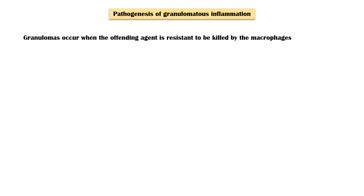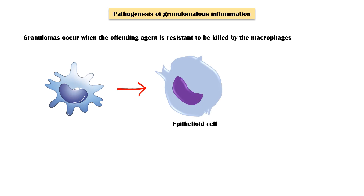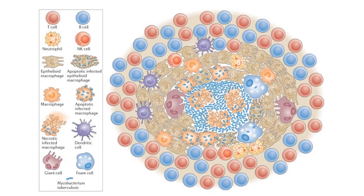Now let's discuss the pathogenesis of granulomatous inflammation. As already mentioned, granulomatous inflammation occurs when the offending agent is resistant to being killed by macrophages. The macrophages are then stimulated to become epithelioid cells, which have more microbial killing ability than macrophages. A granuloma is actually a collection of epithelioid cells surrounded by a rim of lymphocytes. Sometimes there may be multinucleated giant cells and fibroblasts as well. In parasitic infections, eosinophils are also present in the granuloma.